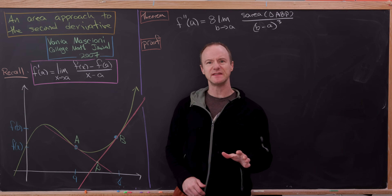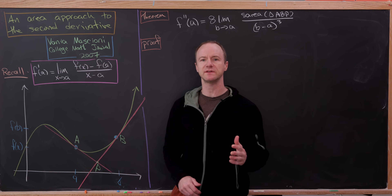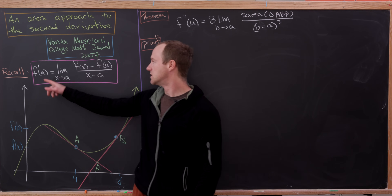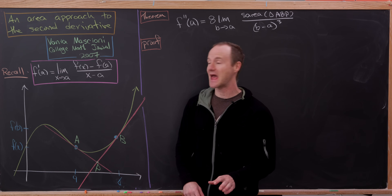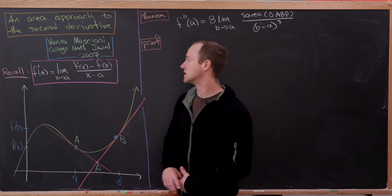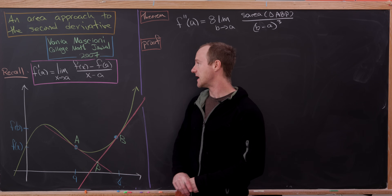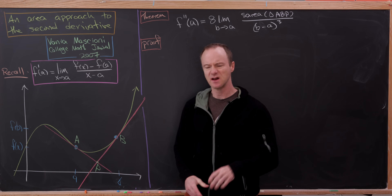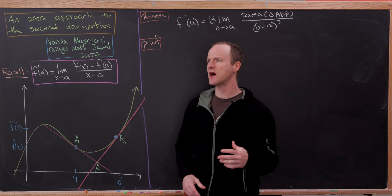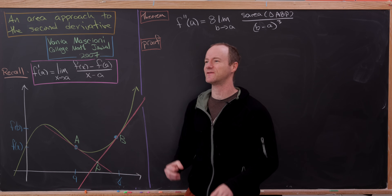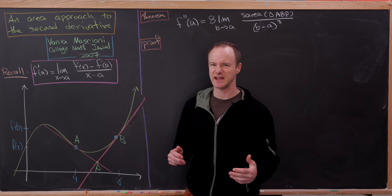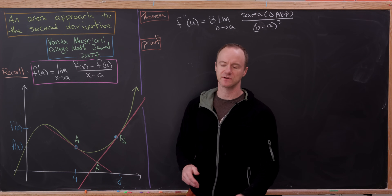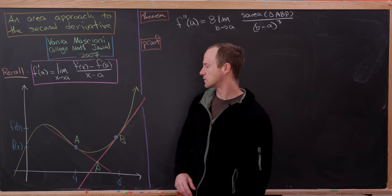Let's see the setup, but before we do that, let's recall the limit definition of the derivative. The derivative of function f at a is defined to be the limit as x goes to a of f(x) minus f(a) over x minus a. Of course, there's another equivalent definition that looks like f(a+h) minus f(a) over h — the so-called difference quotient — but we're going to use this one today.